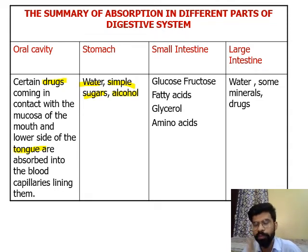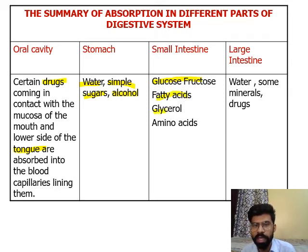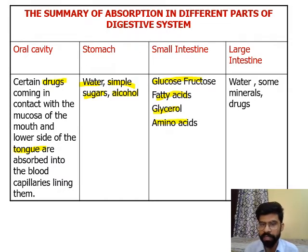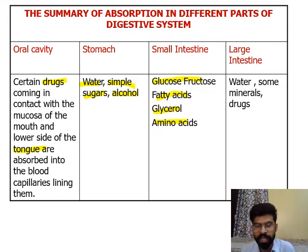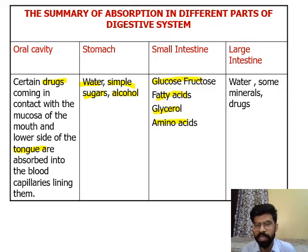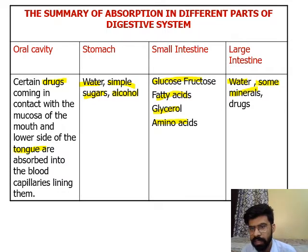The food then moves into the small intestine, where glucose, fructose, fatty acids, glycerol, and amino acids are absorbed. Final digestion of most food components occurs in the small intestine, and maximum absorption takes place there. The structure responsible for absorption is the villi — finger-like projections that facilitate absorption of these nutrients. In the large intestine, water, some minerals, and some drugs are absorbed.